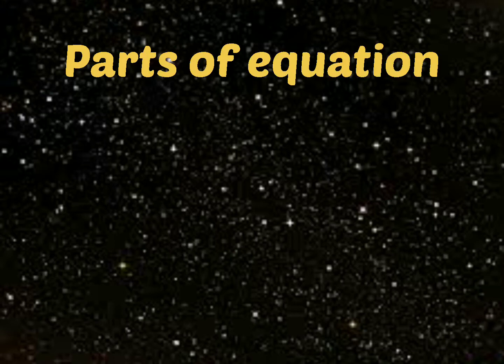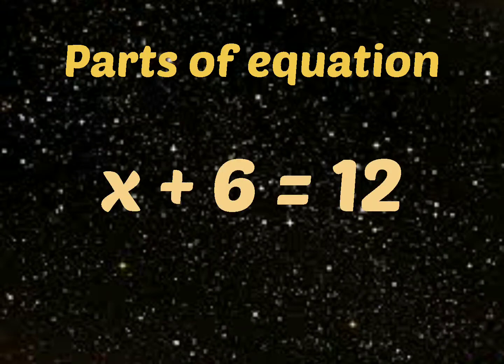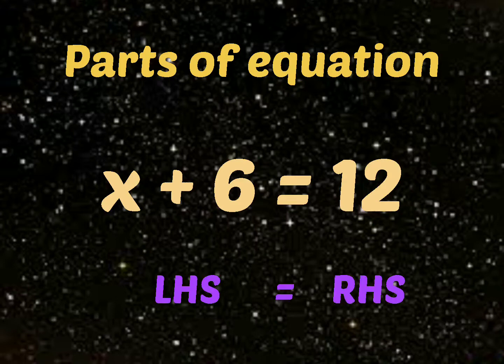We can categorize the linear equation into 3 parts. First, we have an equality sign in the center. To the left of the equal sign is the left hand side, that is LHS. To the right of the equal sign is the right hand side.